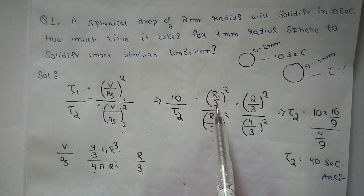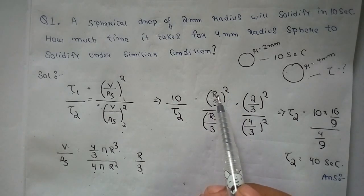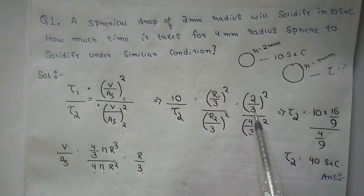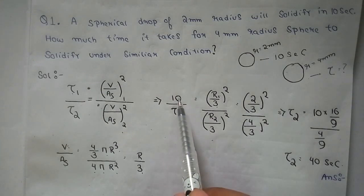r₁ is 2 mm divided by 3, whole squared. r₂ is 4 mm divided by 3, whole squared. From here, if we calculate, we get tau 2 equals 40 seconds.